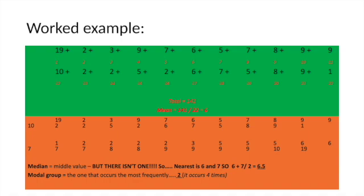So, the median and the modal group require a bit of different effort. Median group is the middle value. But, for those initiated, there isn't the one. So, the nearest is 6 and 7. So, you go in between. So, it's 6.5. Modal group is the one that occurs most frequently. And in this case, it's the number 2, which occurs four times. And so, that is the modal group or 2 is the mode.